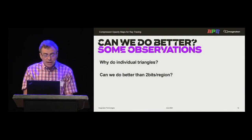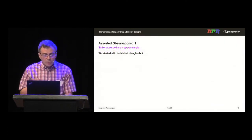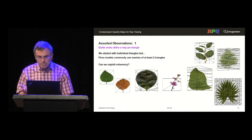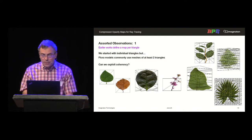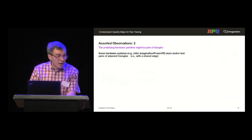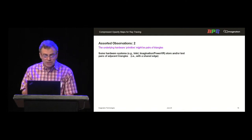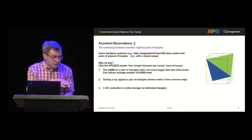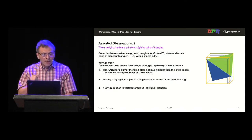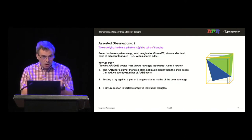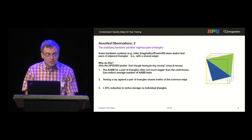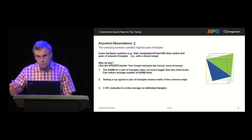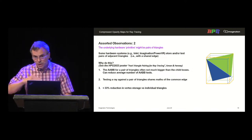Can we do better than two bits per region, and why do individual triangles? Flora models commonly use meshes of at least two triangles, so can we exploit coherence? Some hardware systems — Intel's, Imagination's — store or test pairs of adjacent triangles with a shared edge. The AABB of a pair of triangles is rarely much bigger than either constituent. Testing a ray against a pair can share the maths of the shared edge, and you get a 33% reduction in vertex storage.